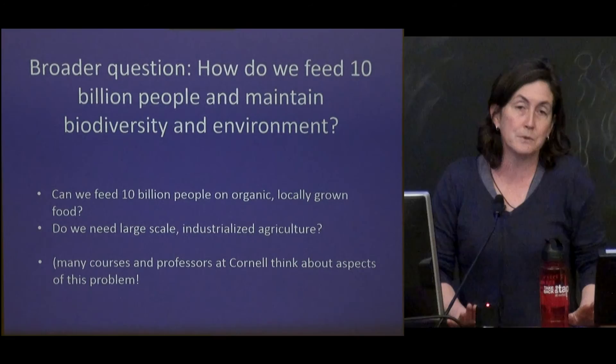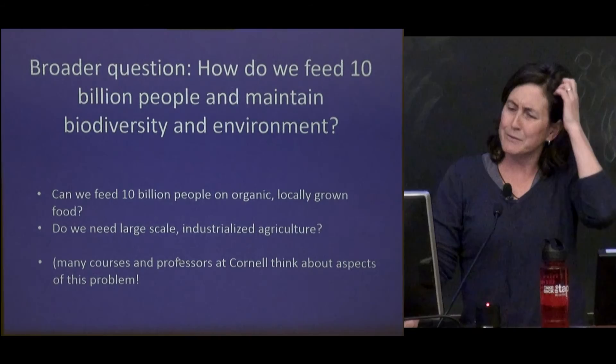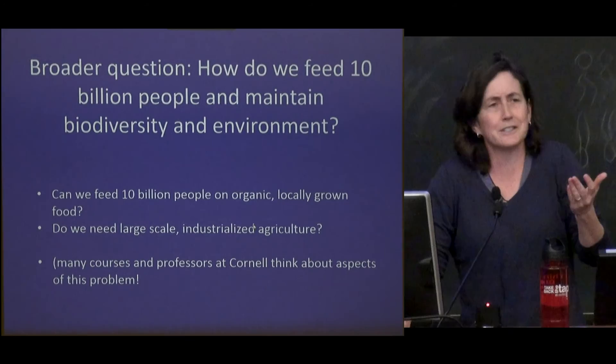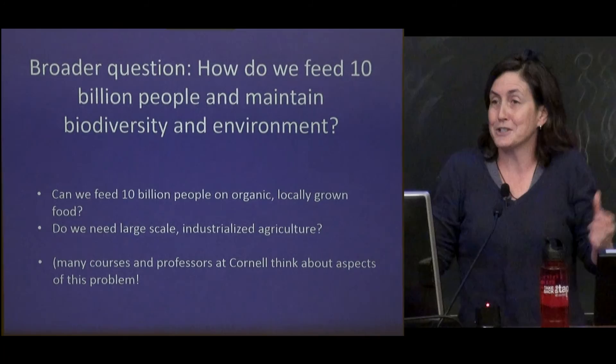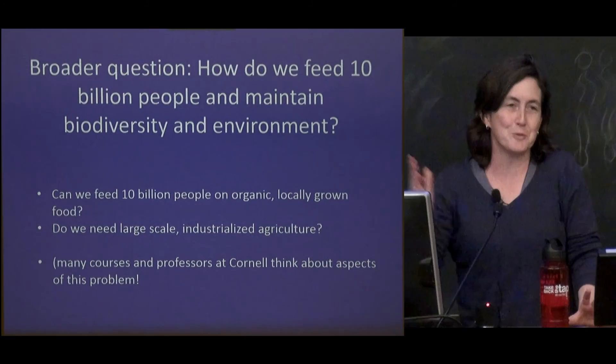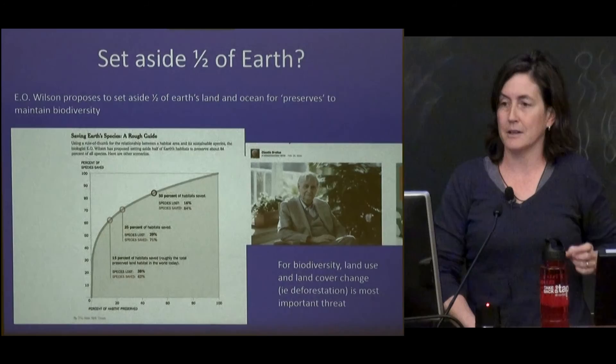I go down to the Ithaca Farmers Market and try to buy my produce there and grow some in my backyard. Can we really feed 10 billion people on organic, locally grown food, or are we going to have to cut down all the forests — because it's less efficient than large-scale industrialized agriculture? How are we going to feed all these people and maintain any biodiversity? That's a broader question we all should be thinking about.